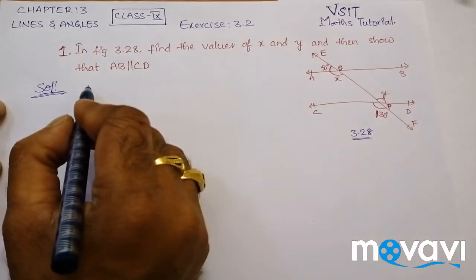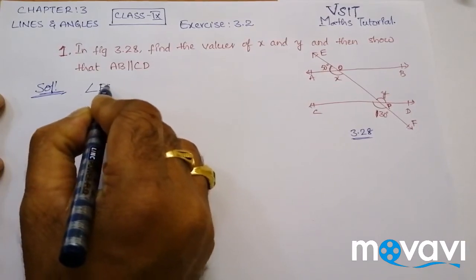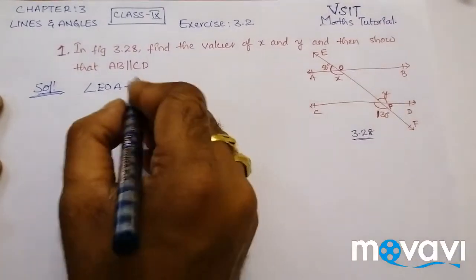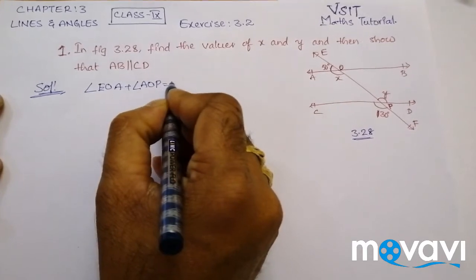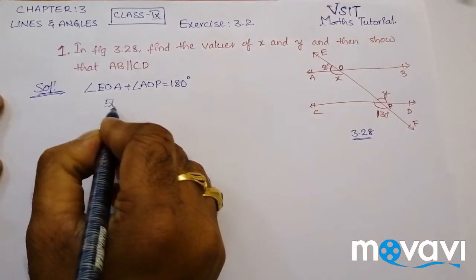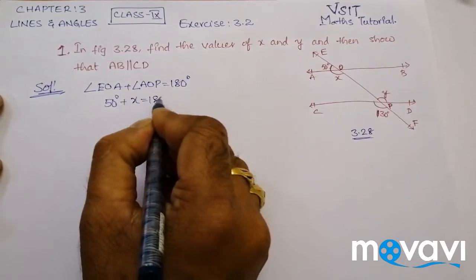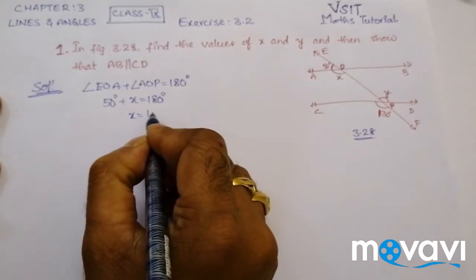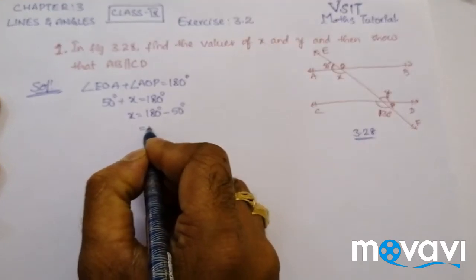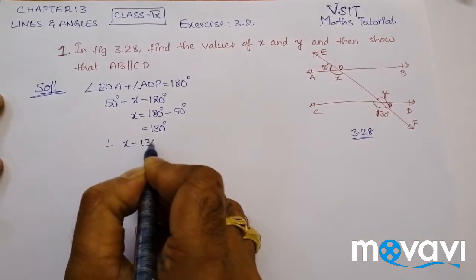Let us write here in terms of steps. Angle EOA plus angle AOP is equal to 180 degrees. Angle EOA given here is 50 degrees. So 50 degrees plus X is equal to 180 degrees. Therefore X is equal to 180 degrees minus 50 degrees, which is equal to 130 degrees.